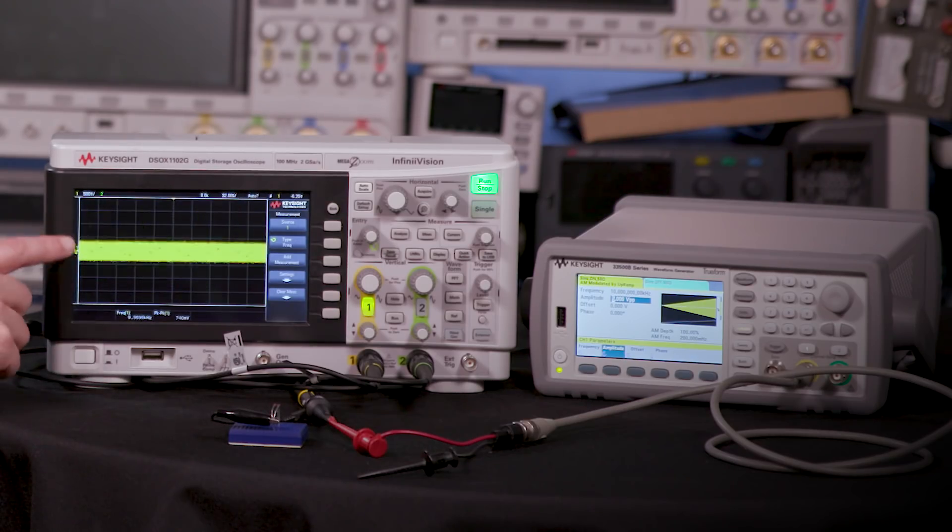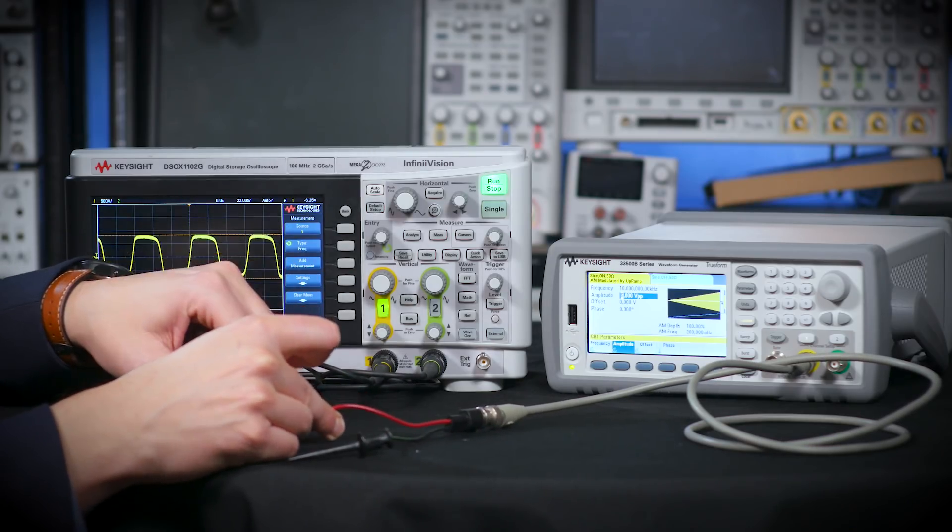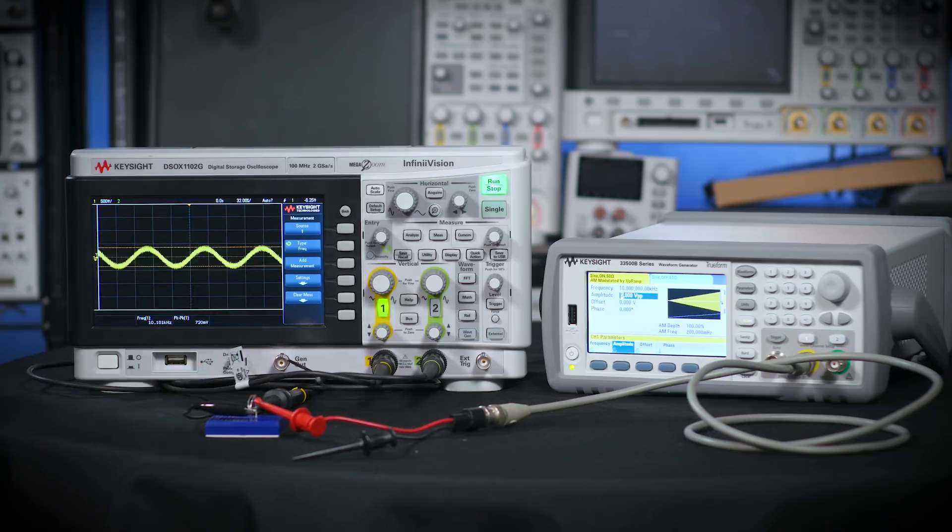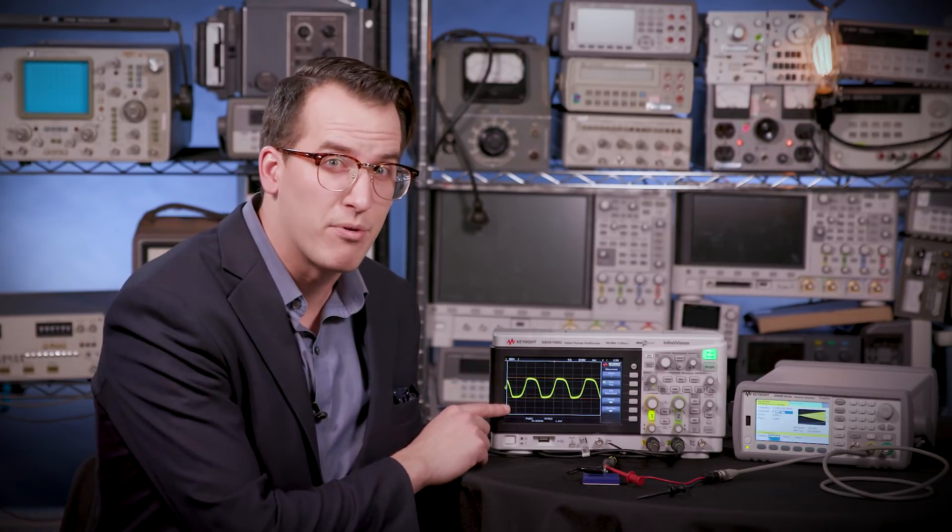So right now I just have a AC modulated signal going into my scope. Now watch what happens if we sweep the input amplitude between 0 and 5 volts and connect the signal up to our limiter. And you can now see that my voltage peak to peak doesn't swing beyond plus 0.8 volts or minus 0.8 volts, which is essentially the forward voltage of these diodes.